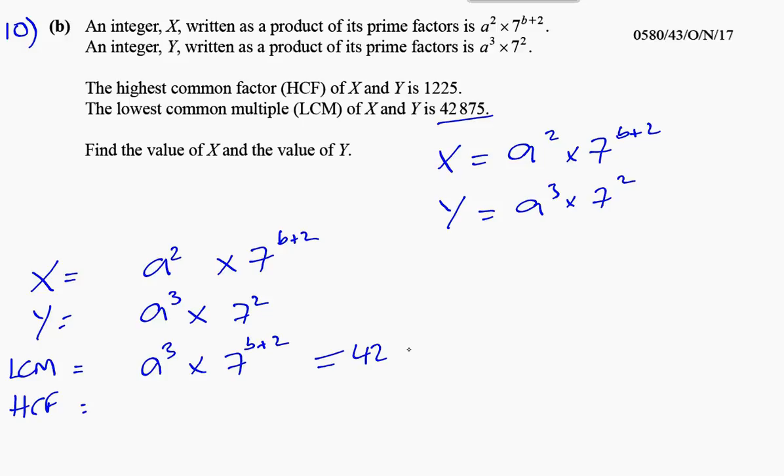And the HCF is given by the lowest formula. So it's going to be for the a's, a². And for the 7s, it's going to be 7². They told us that is equal to 1,225. Now from these equations, we can now solve this problem.